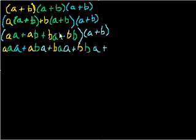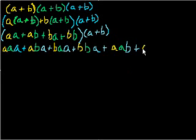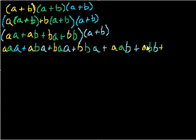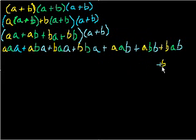Now we do blue-b times everything. So: yellow-a times green-a times blue-b; plus yellow-a times green-b times blue-b; plus yellow-b times green-a times blue-b; plus yellow-b times green-b times blue-b. The good thing about the colors is it's easy to keep track of where we are.